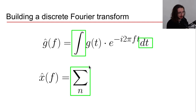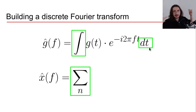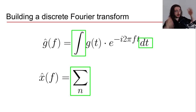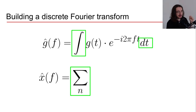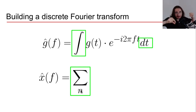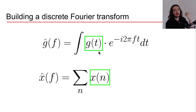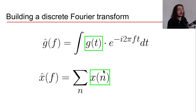In the continuous case, the top equation uses an integral, because time is continuous and we have infinite points in time — and when you sum over something continuous and infinite, you use an integral. In our discrete case, we have discrete sample points, so we use a sum over n, the different points where we take samples. We also replace g(t) with x(n).